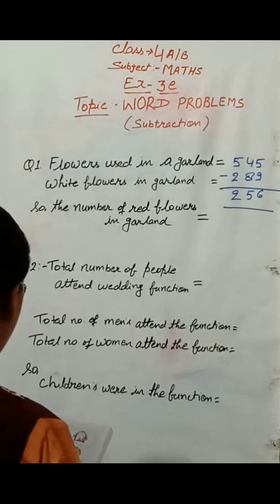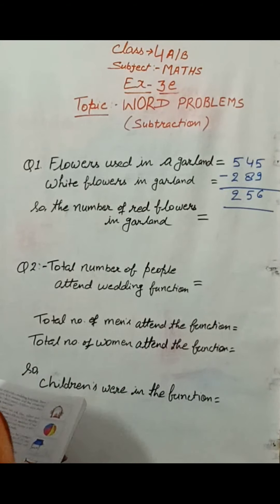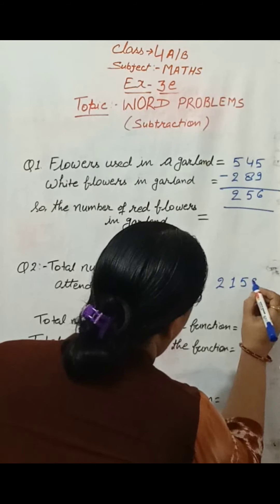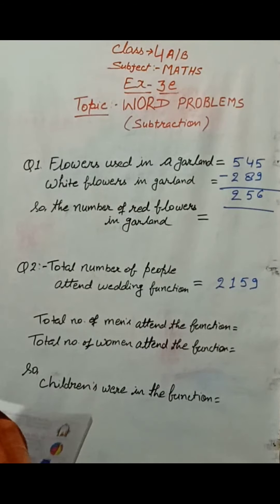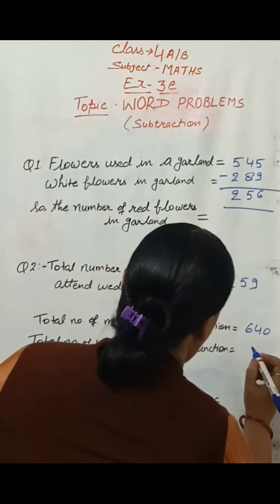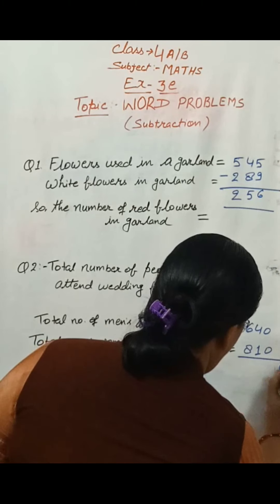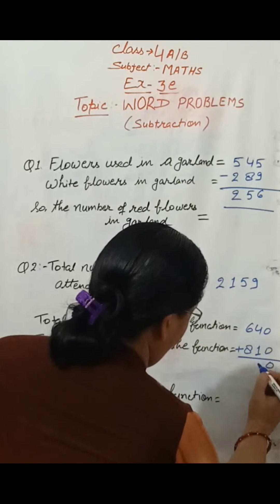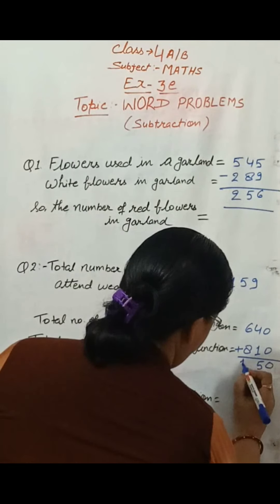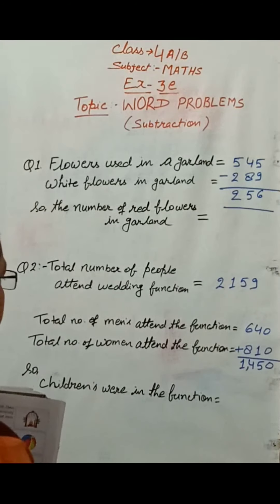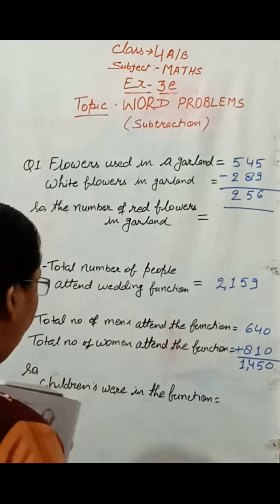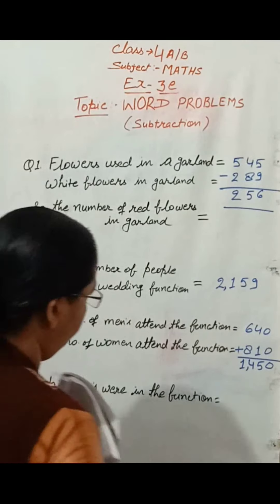The total number of people at the wedding function is 2159. The number of men is 640 and the number of women is 810. We add 640 and 810: 8 plus 6 gives 14, so the total is 1450.